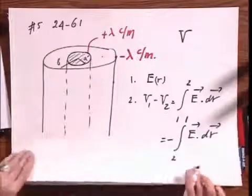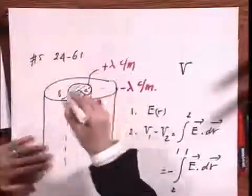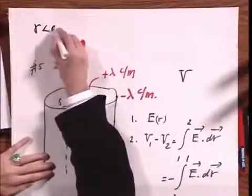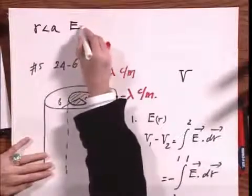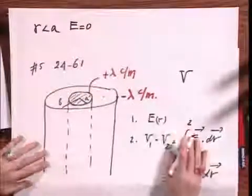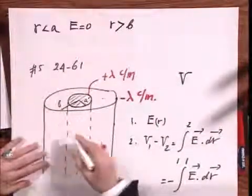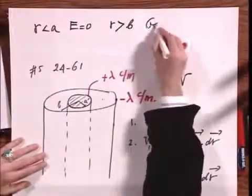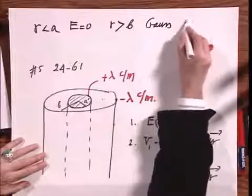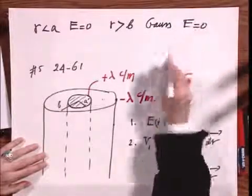Very well. Let's now first look at R is smaller than A. It's very clear that E equals zero there. But let's go for R larger than B, that is outside the cylinder. It's clear that if you apply Gauss' law, that you will also find that E equals zero.